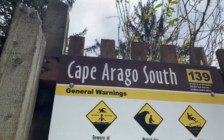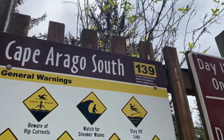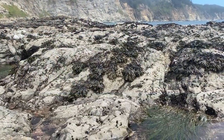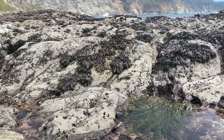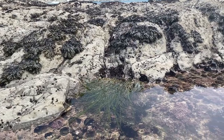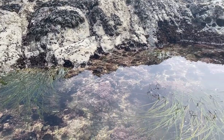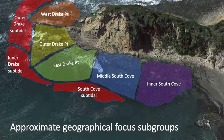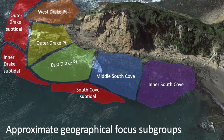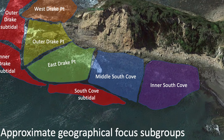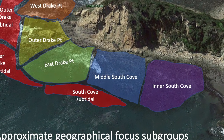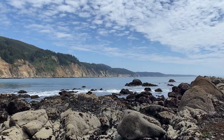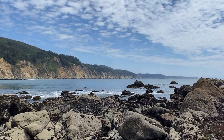In Cape Errico State Park, the spring 2021 marine ecology class went to South Cove to do the data collection for this project. The South Cove Rocky Intertidal Zone by Drake Point was separated into six sections to be sampled by groups over the course of two weeks. The sections defined were Inner South Cove, Middle South Cove, East Drake Point, Outer Drake Point, West Drake Point, and the Subtitle. Our group was assigned to sample Middle South Cove using a methodology that was curated to fit the terrain in the study area.